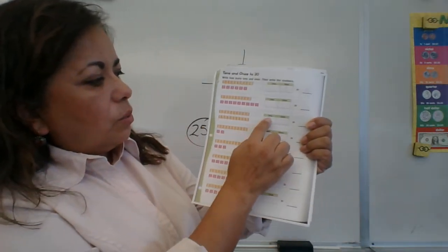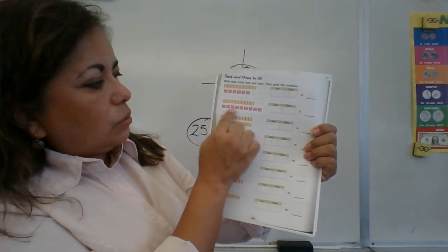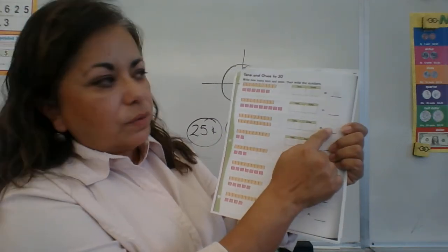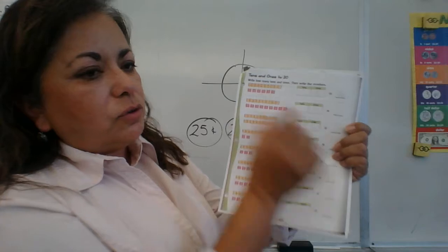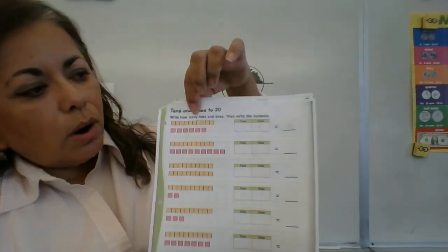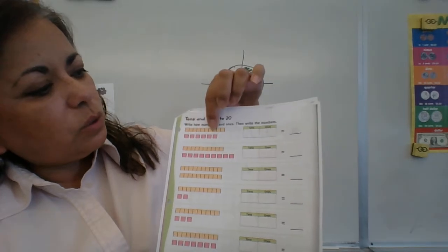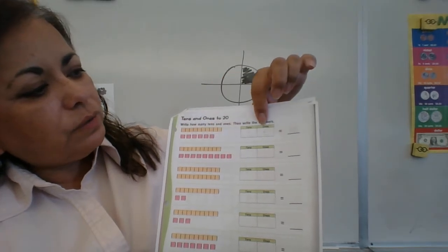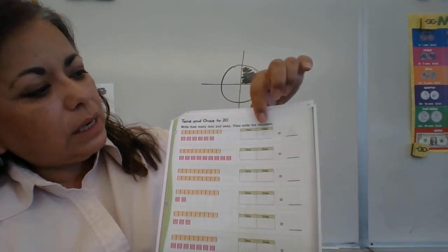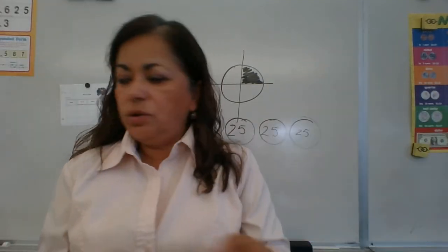Do it in your head — don't count each little square. So you write: I have two tens but no single squares, so you put a zero. They gave you the first answer: you have one bar which is 1 ten, then six squares which are six ones. A ten and a six together is 16.